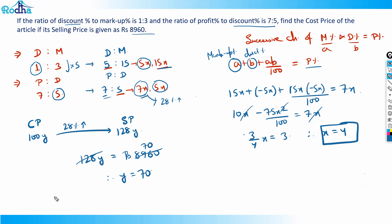Since y = 70, the cost price is 100 × 70 = rupees 7000. That's the answer to this question. We applied the successive change concept from the previous question — a very useful concept.